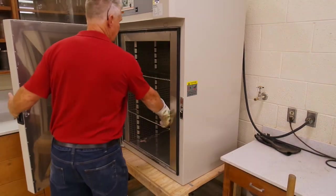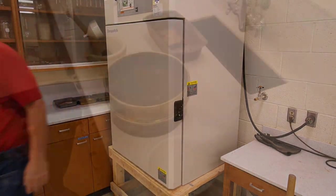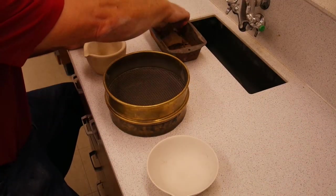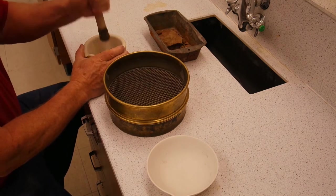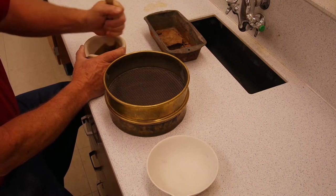The first thing we need to do is prepare our soil. Depending on the percent of fines passing the number 200 screen will determine the amount of soil we need for this test. Typically, you will use between 50 and 100 grams.